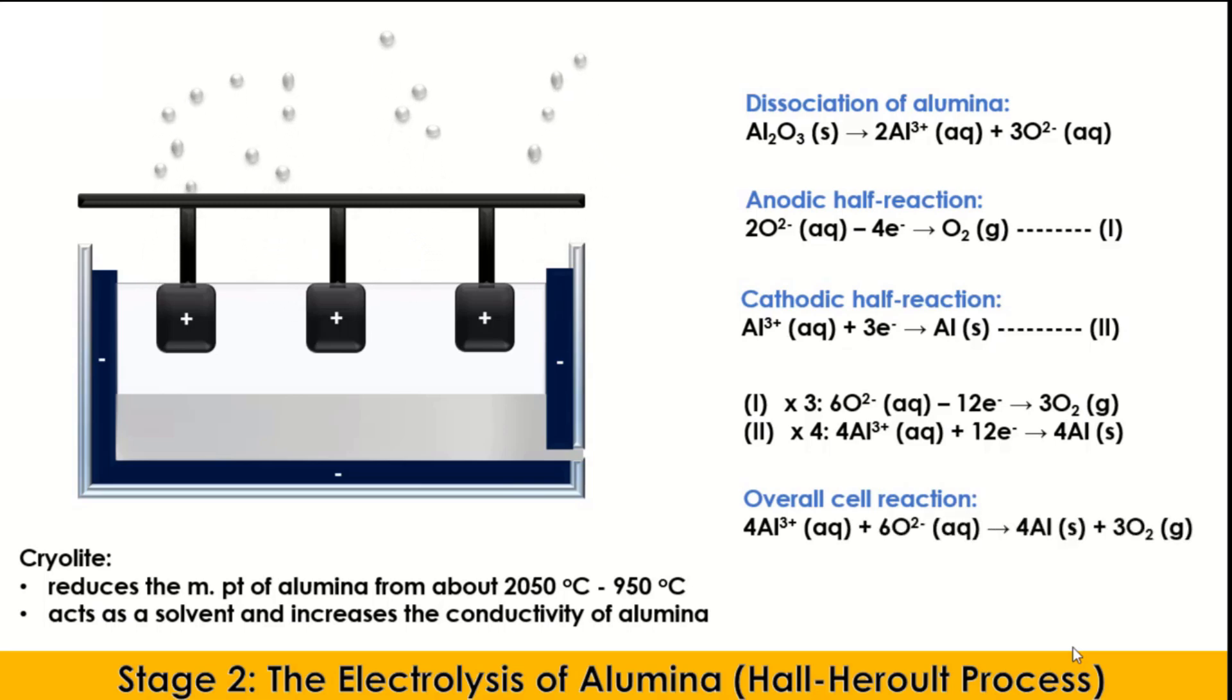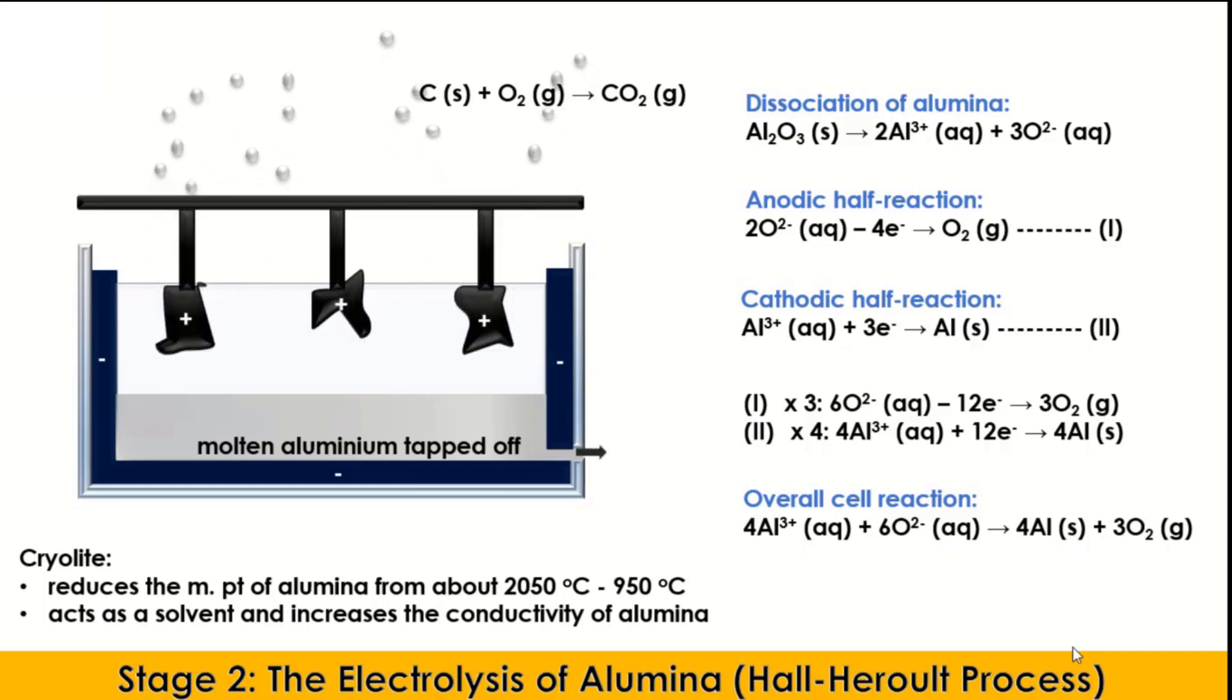After a while, the molten aluminum is tapped off and poured into molds and allowed to cool. Meanwhile, the oxygen gas liberated at the anode reacts with the carbon graphite to form carbon dioxide. After a period of time, the anode wears off and has to be replaced regularly. This is a major challenge in the extraction process. It is expensive and adds to the overall cost of the process.